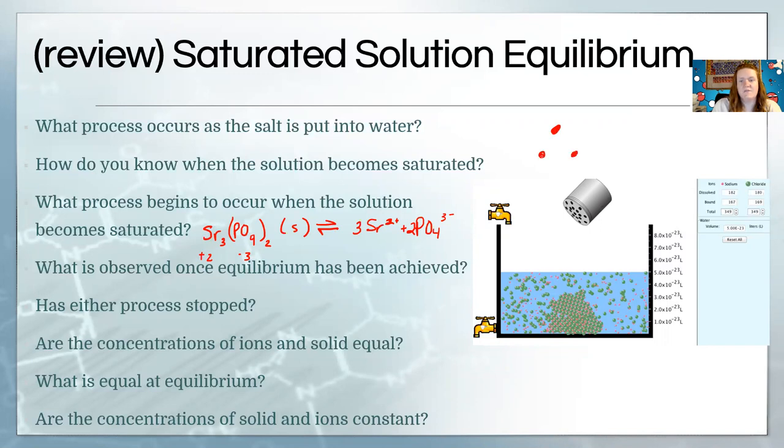Whatever was a subscript has become a coefficient because these pieces are going to break up. So if we just draw like a little sketch: here's three strontiums, I'm not going to draw the structure of what phosphate looks like—you can look at some prior notes for that—but I'm just going to draw it as a purple ball. So what we're representing here is we have this solid where everything is connected to each other.